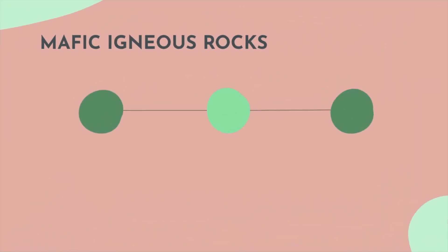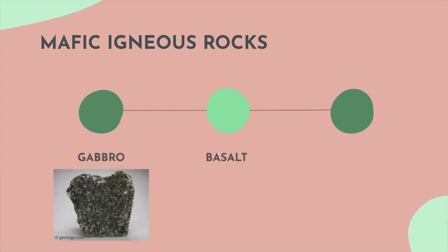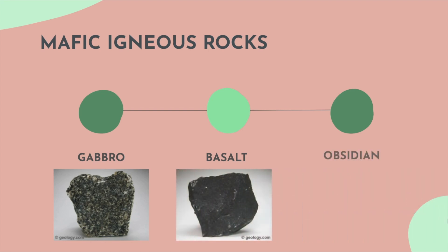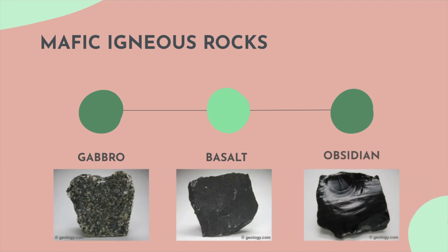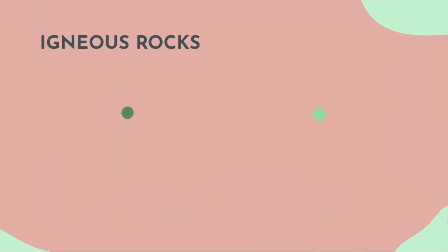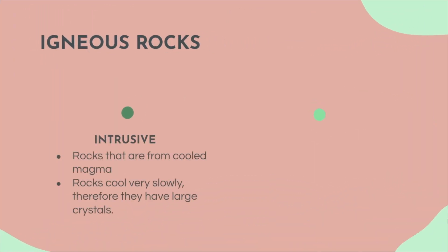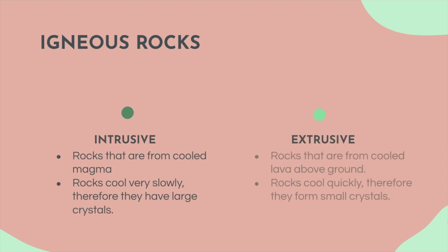Mafic igneous rocks look like gabbro, basalt, and obsidian — you might have seen that in Minecraft. Igneous rocks can be intrusive, meaning that the rocks are formed from cooled magma. Rocks cool very slowly, therefore they have large crystals. Or they can be extrusive — rocks that are from cooled lava above ground. Rocks cool quickly, therefore they form small crystals.